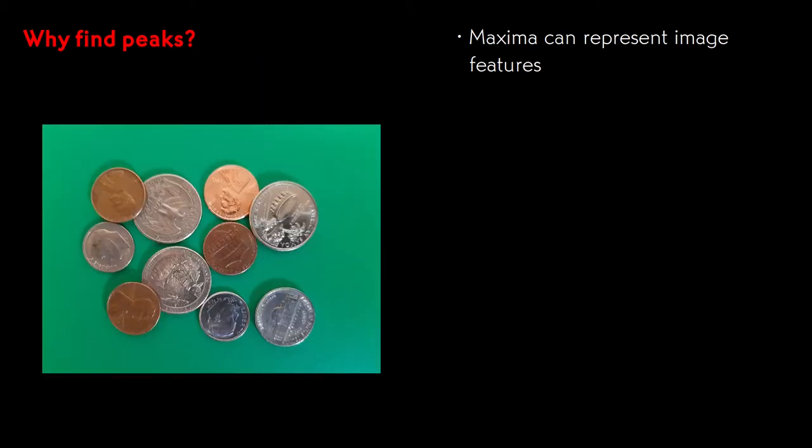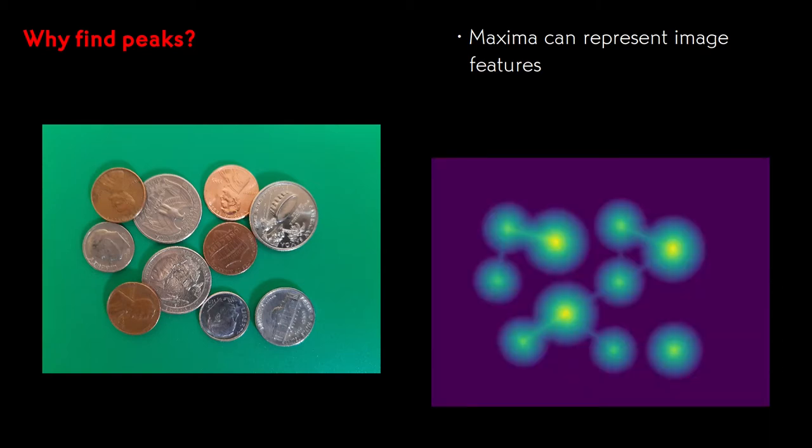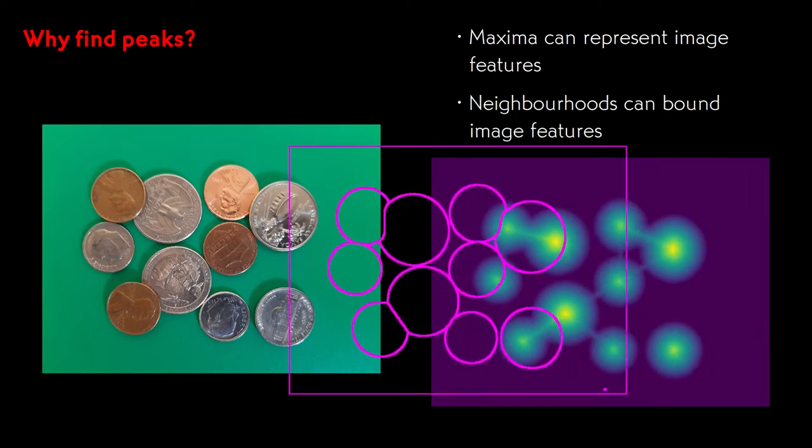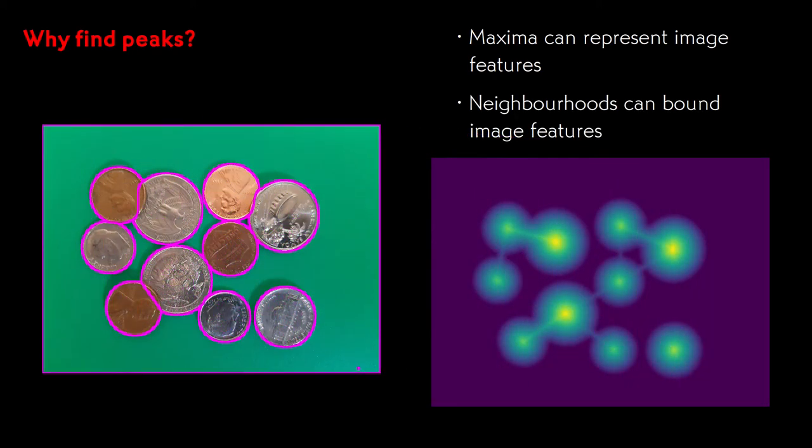More recently, in the last video, we used the Euclidean distance transformation to convert an image of coins to a map of values where the peaks correspond to the coins. Here we also needed the neighborhood of a peak, because those neighborhoods could be used to isolate individual coins in the image. So we also need to formalize this concept of a neighborhood.